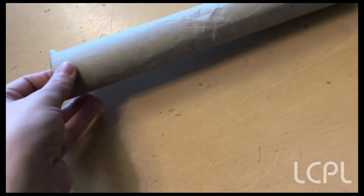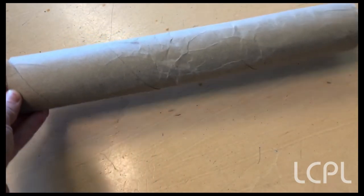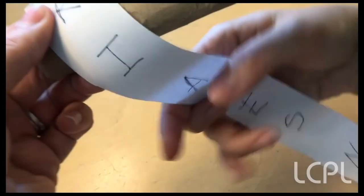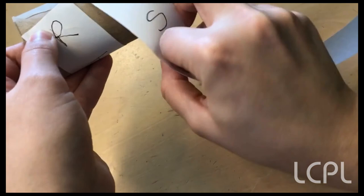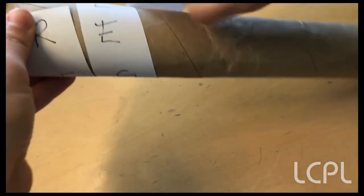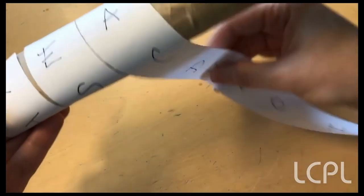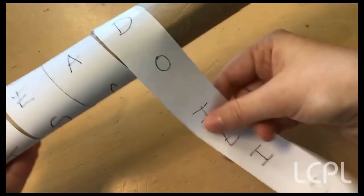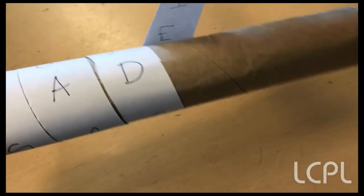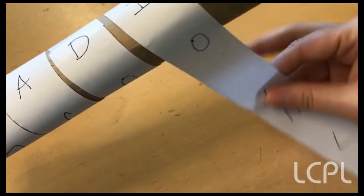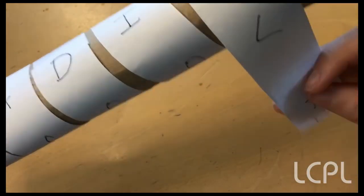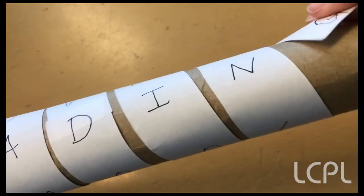And so the only way that someone will be able to figure out your secret code is if they have something long and cylindrical like this that's exactly the same size. And so you'll see that if we wrap it over again, so that it's not overlapping, just like before, our code is back.